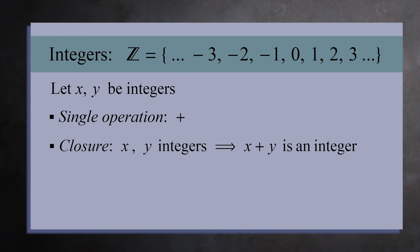And there's one number which has a unique property, zero. If you add zero to any integer, you get the same integer. It has no effect when adding.